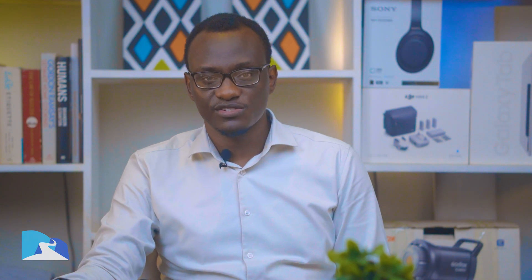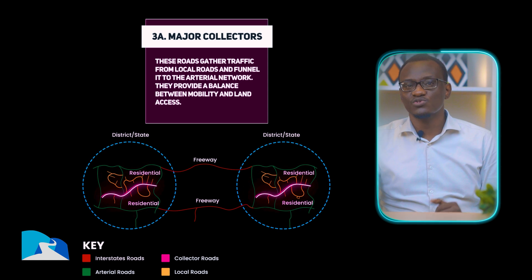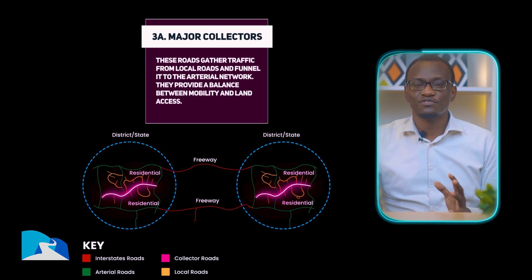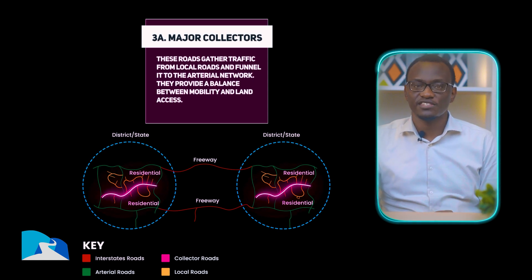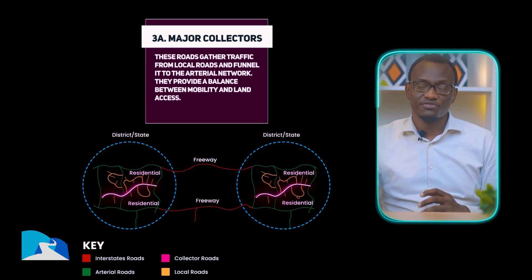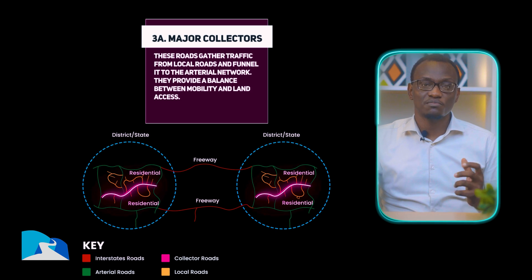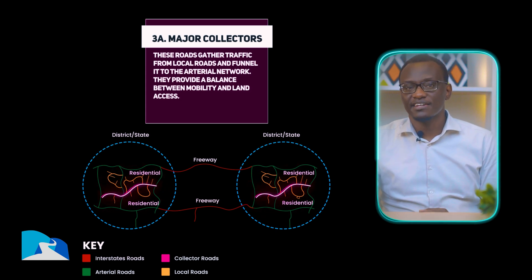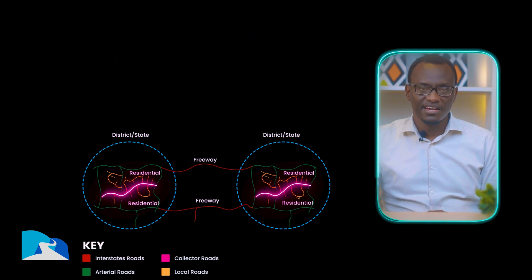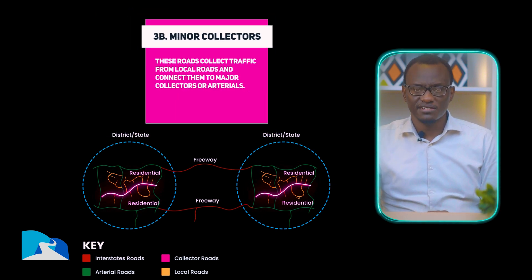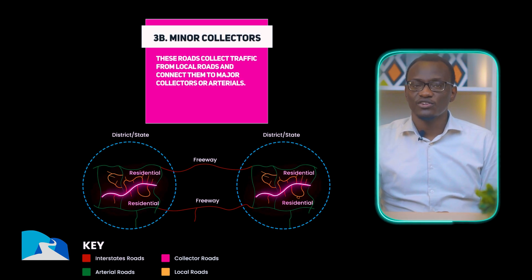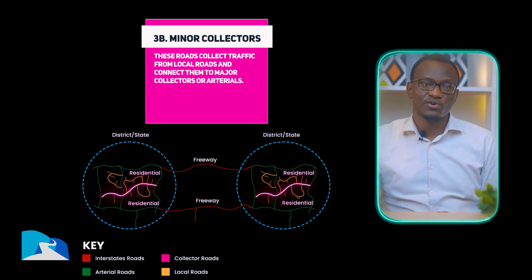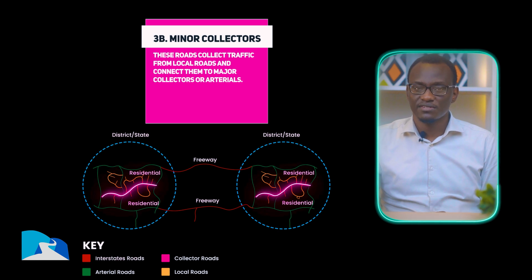The next class of roads are the collectors. We have the major collectors — these roads gather traffic from local roads and funnel it to the arterial network. These provide a balance between mobility and land access. You also have the minor collectors, which collect traffic from local roads and connect them to the major collectors or the arterials.